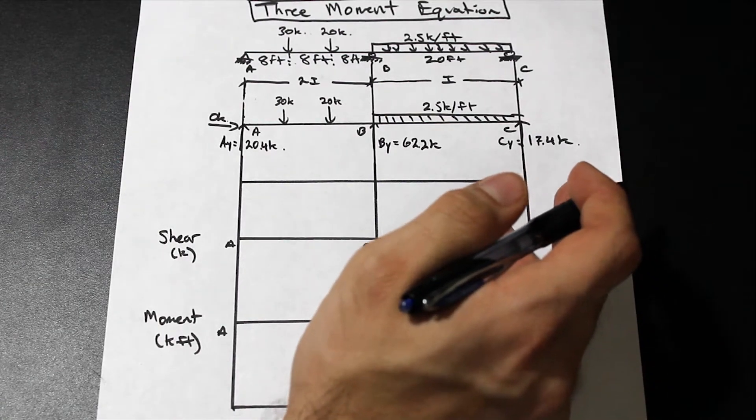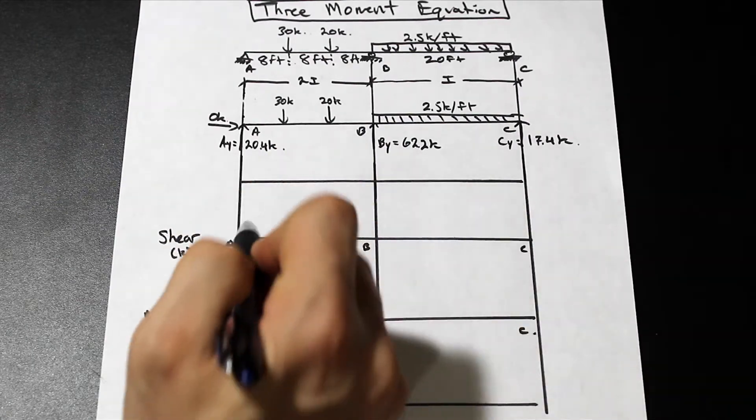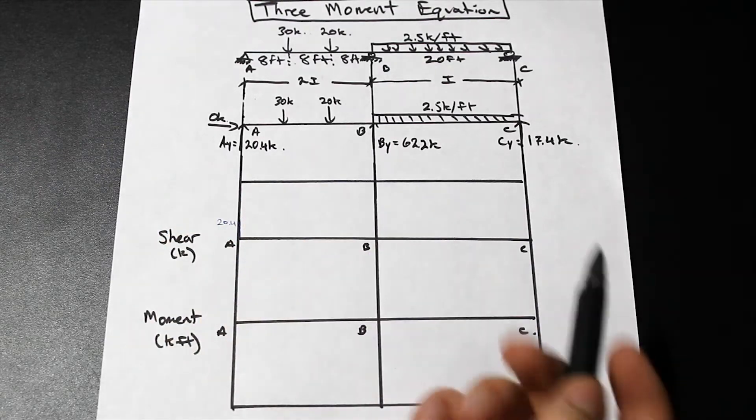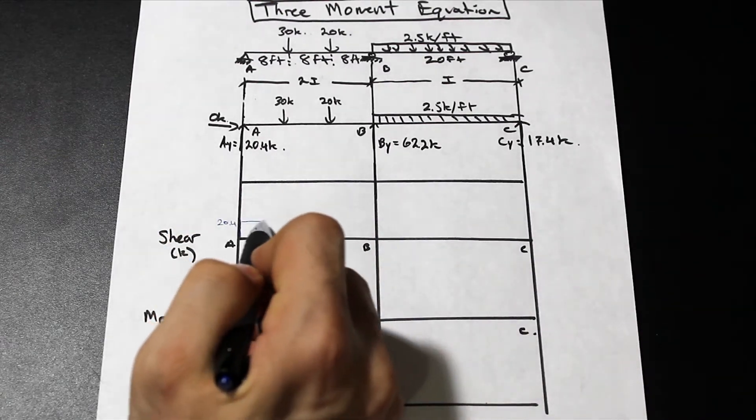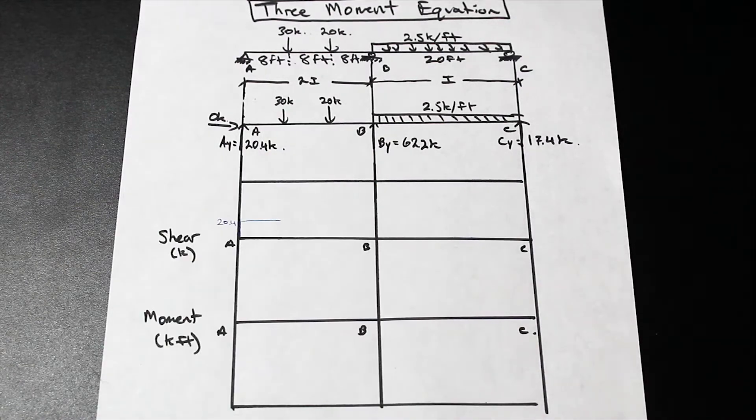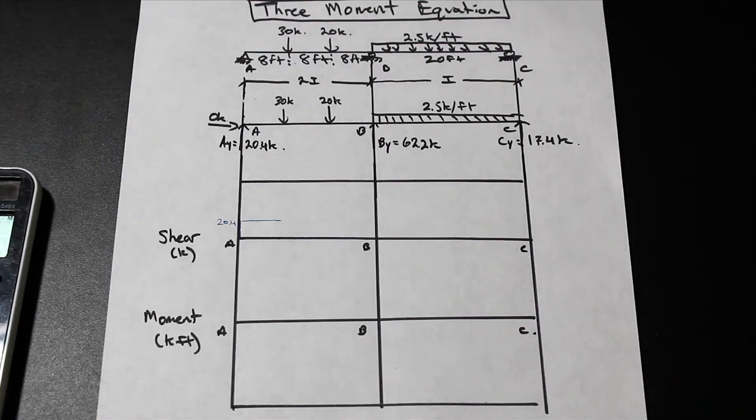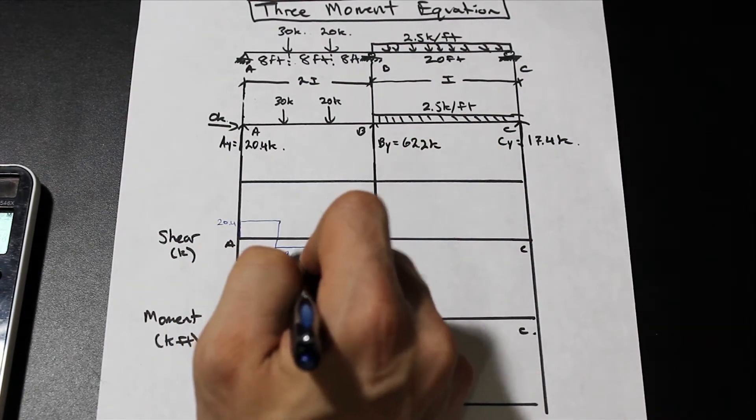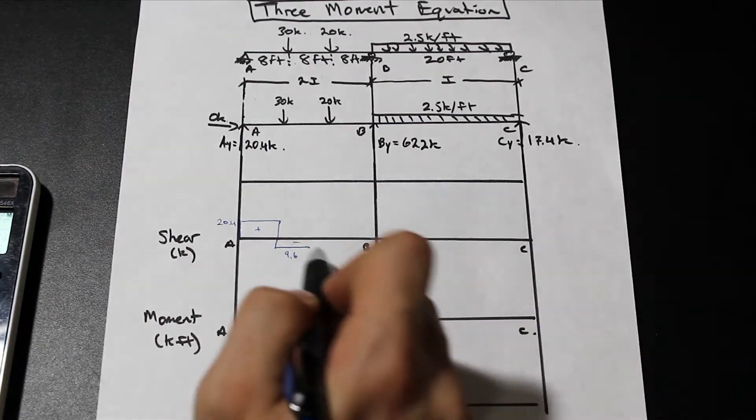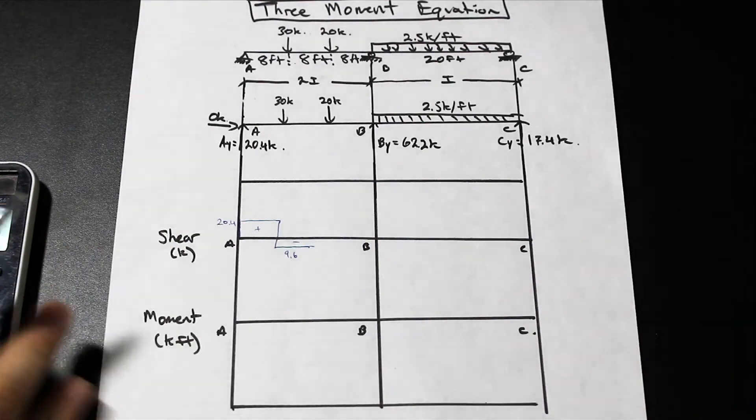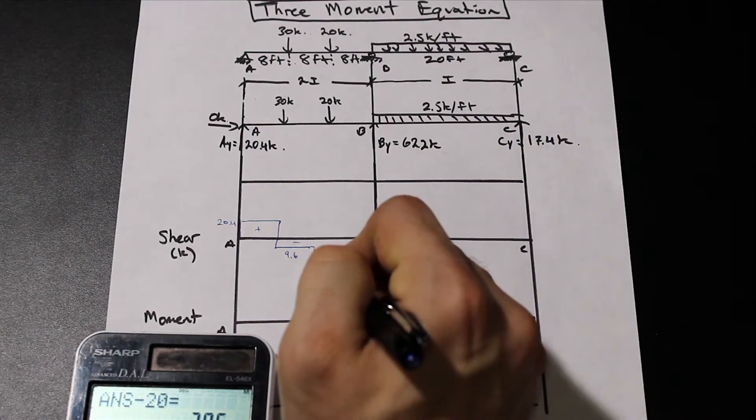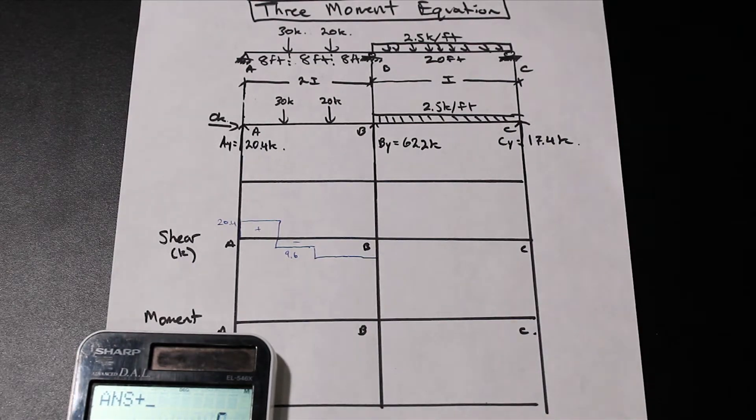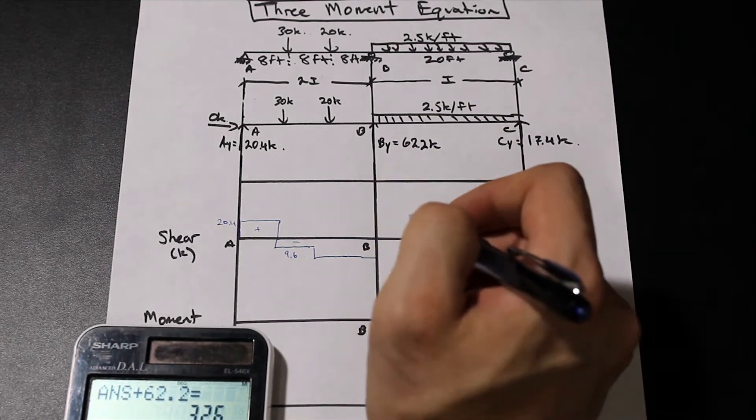So let's just go ahead and start to draw the shear, and we'll see what we get. We're going to use the method in which we don't do any equations. So we're going to go up 20.4 kip. We're going to go across to the 30 because we have this 30 kip that's down, and we're going to get negative 9.6. Very good. Let's go ahead over to the 20, we'll subtract another 20 to get 29.6 negative. And we're going over to B, and when we get to B we're going to add the reaction because it's up.